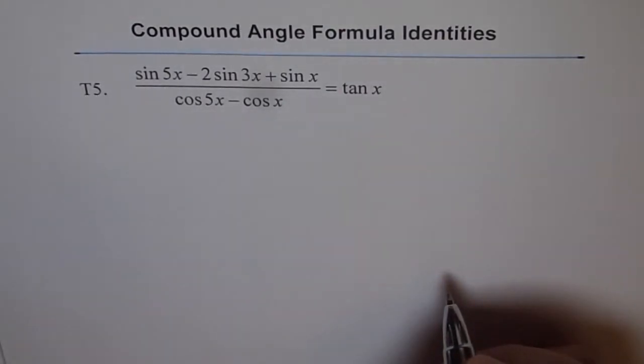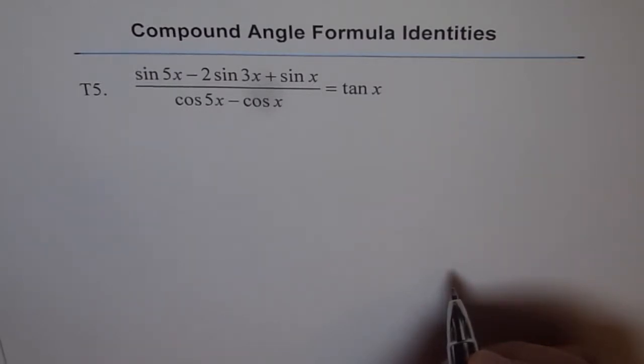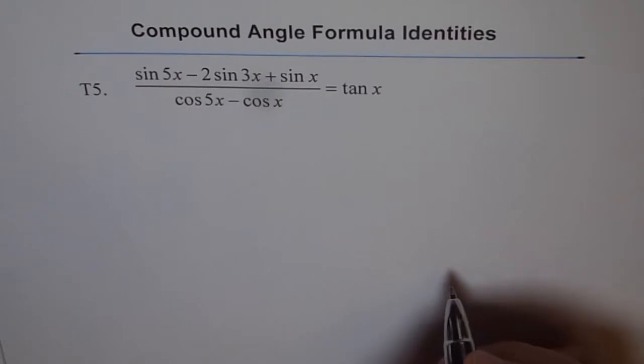Now here we are going to apply two different formulas. One is called the sum-to-product form. We have a video on this, so you can look into how those formulas are derived. From here we will collect the terms sin 5x and sin x, and then use the sum-to-product form to convert sin 5x plus sin x into their product form.